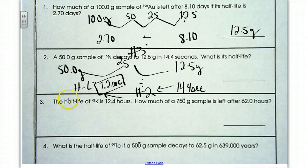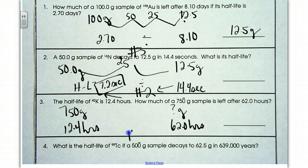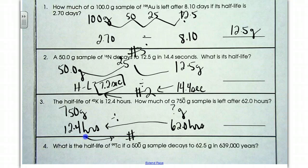We'll do one more example. Here, I'm giving 750 grams as the original sample. We want to know how much is left after a total time of 62.0 hours if the half-life is 12.4 hours. And so to determine the number of half-lives, I need to do my 62 divided by the 12.4, and that's going to equal my number of half-lives, which is 5. That means I'm going to cut this sample in half five times until it reaches my final amount, which is 23.45 grams.